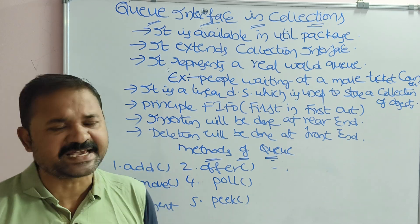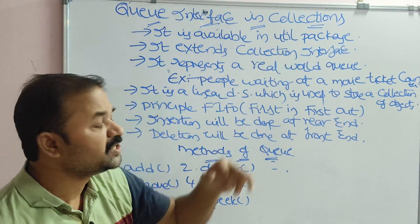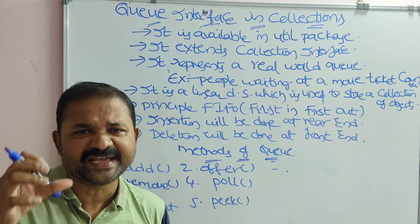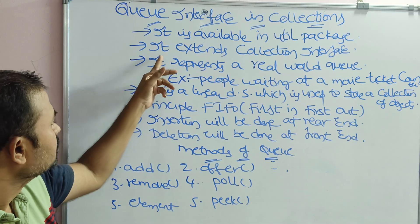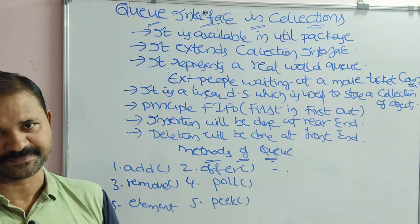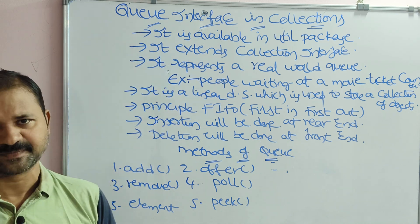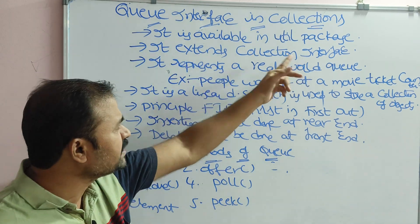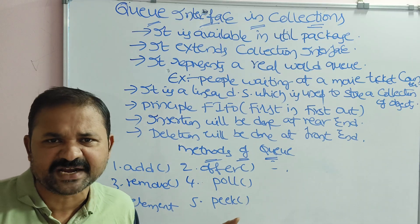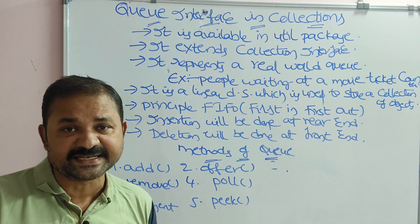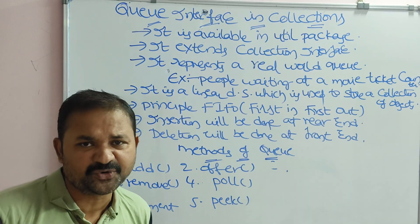Let us discuss the Queue interface in collections. The Queue interface is available in the java.util package. In collections, every interface, class, and method is available in the util package only. Queue interface extends the Collection interface, so Collection is the parent interface and Queue is the child interface. The relationship between interface to interface is 'extends', and class to interface is 'implements'.